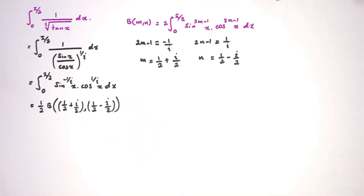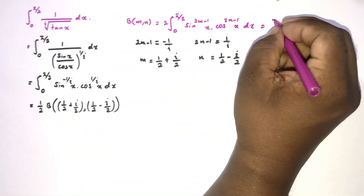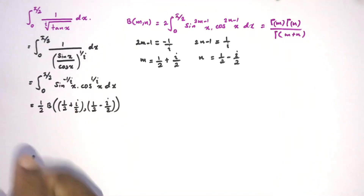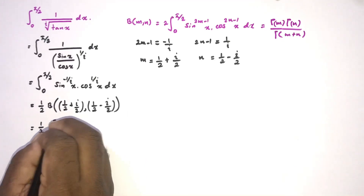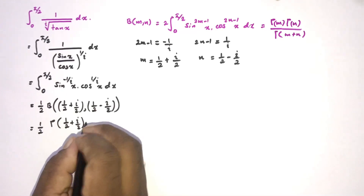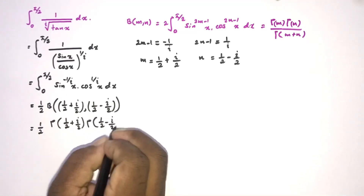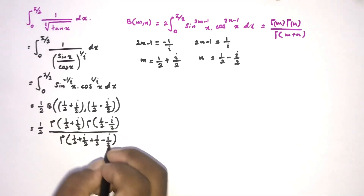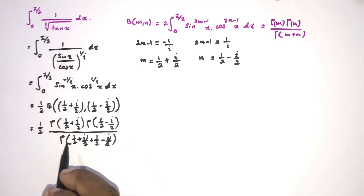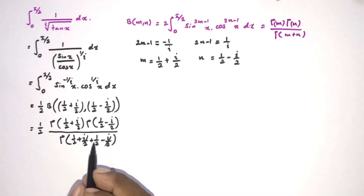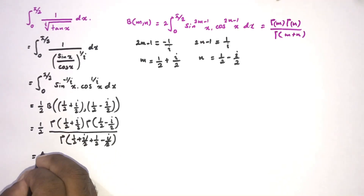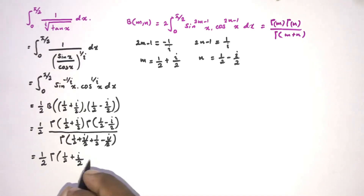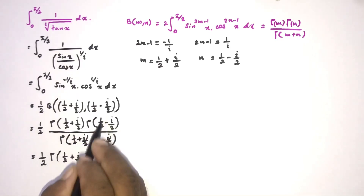Now we know the relation between the gamma function and the beta function: beta of m, n equals gamma(m) times gamma(n) over gamma(m plus n). So we can write this as 1 half times gamma(1 half plus i over 2) times gamma(1 half minus i over 2) over gamma(1). Since m plus n equals 1 half plus i over 2 plus 1 half minus i over 2, the i over 2 terms cancel giving gamma(1) in the denominator.